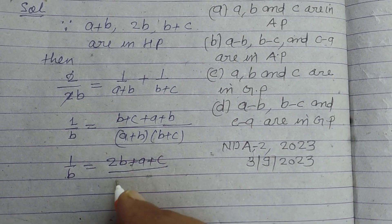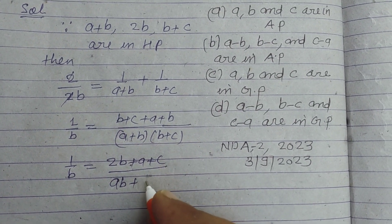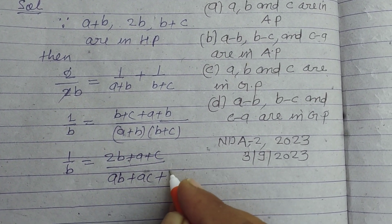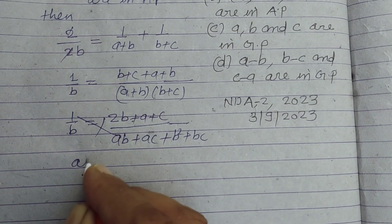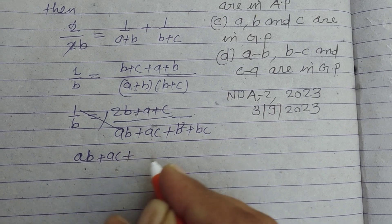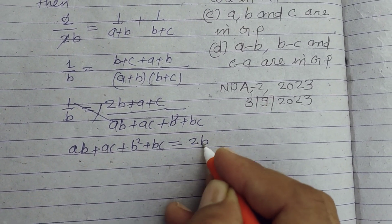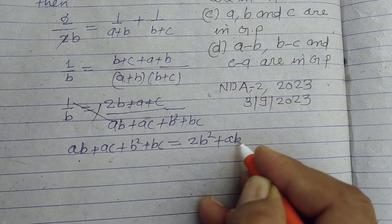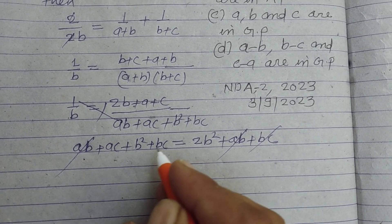And this is ab, ac, b square, bc. Now on cross multiplication we got ab plus ac plus b² plus bc equals 2b² plus ab plus bc. ab, bc, ab, bc cancel.